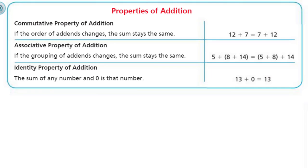That's basically it — pretty simple. Some people think of it as the switcheroo property. There are different ways you can try to remember it. I just happen to remember it as the commutative property, but if it helps you, the old switcheroo property of addition works too. Use whatever you can to remember this property.